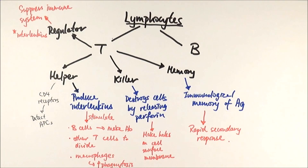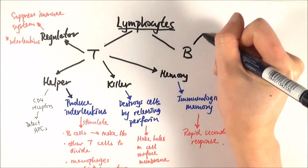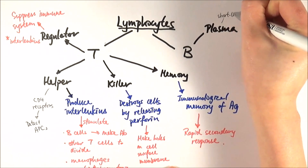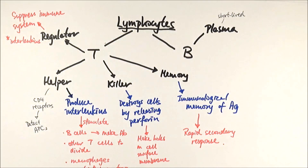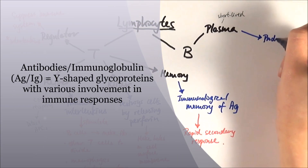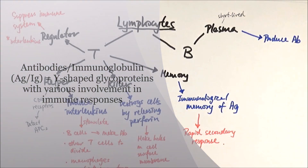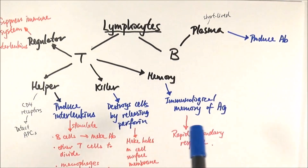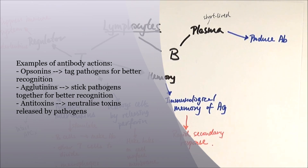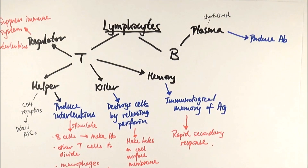B lymphocytes are in some sense slightly easier because there are only three types to know. First, there is the plasma cell. B plasma cells are relatively short-lived — they are present during the attack and die quickly after. They are the ones that actually produce antibodies. These immunoglobulins can then go on to do different things: they can act as opsonins to attack pathogens, become agglutinins to stick pathogens together, or act as anti-toxins to neutralize toxins.